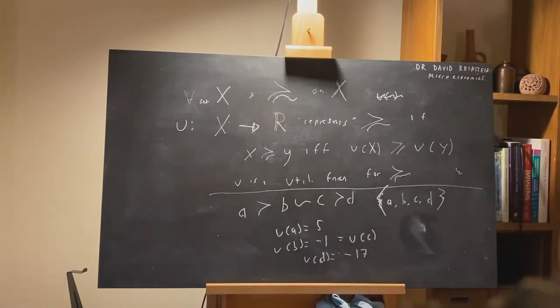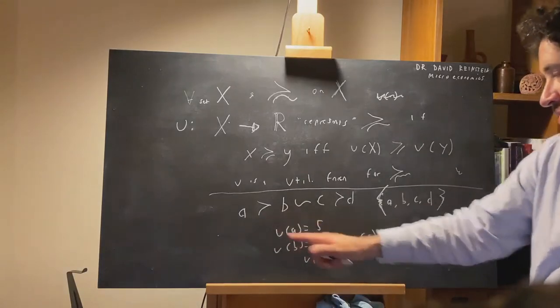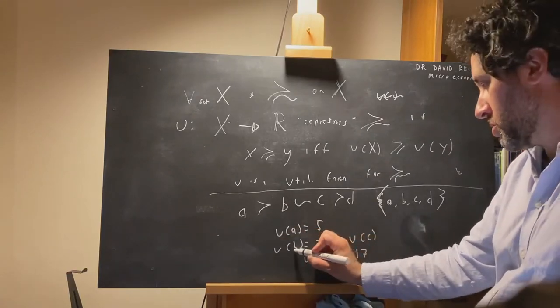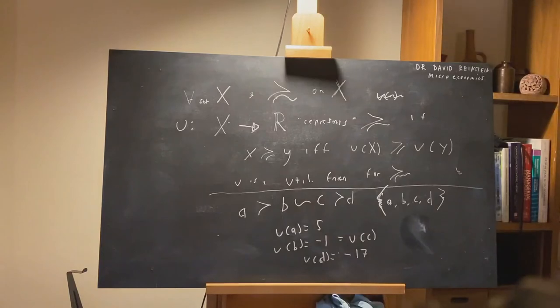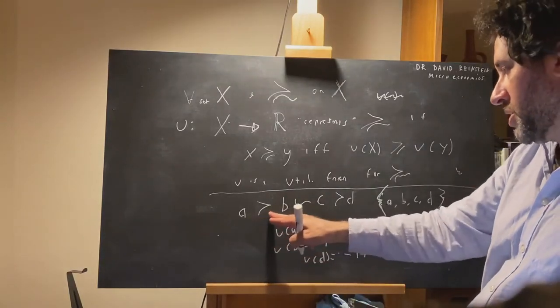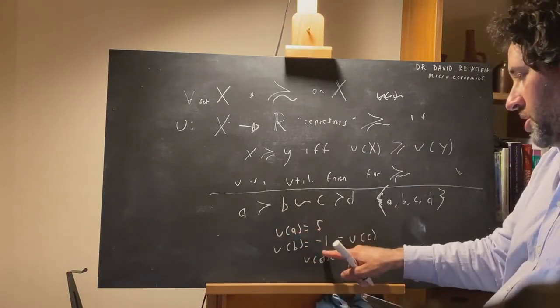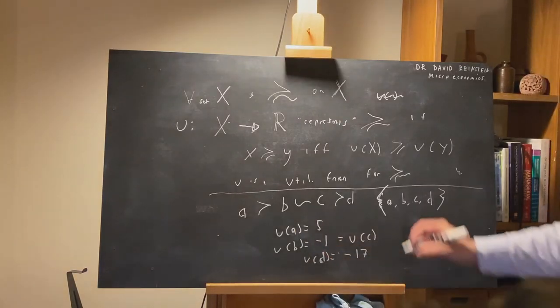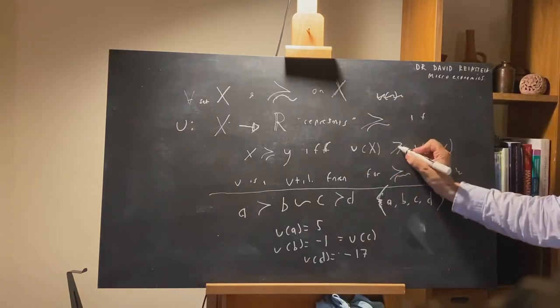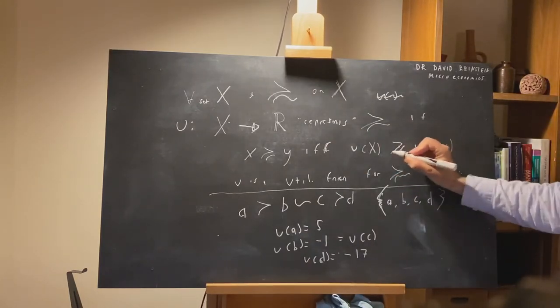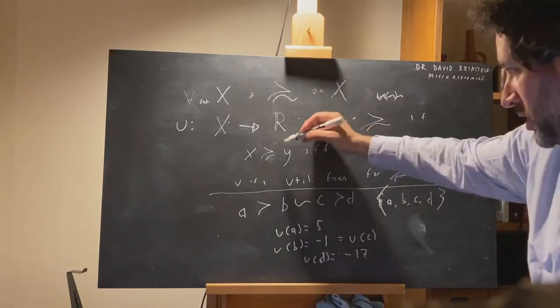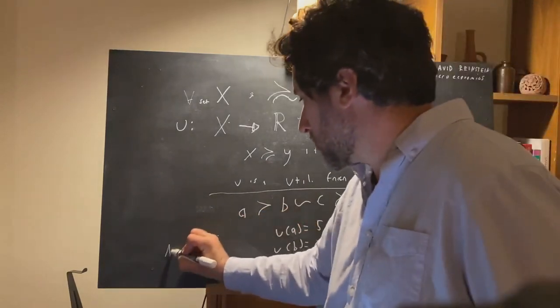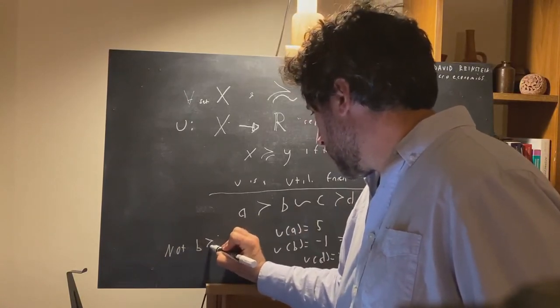Does this represent the preferences? Well, A is preferred, strictly preferred to B. So is the utility of A a larger number than the utility of B? Yes, it is. Five is larger than negative one. So, going back to the weak preference, A is weakly preferred to B. Is the utility of A at least as high as the utility of B? Yes, it is.